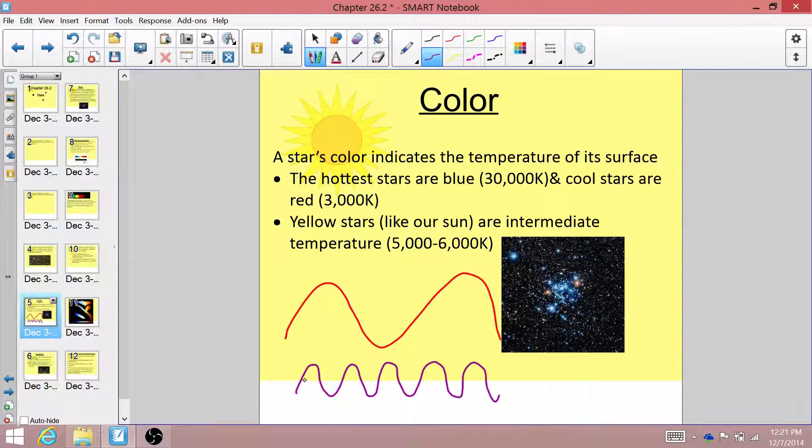If our sun were violet hot, it would probably be too hot to sustain life on Earth. And if it were red hot, it might not be hot enough to provide the heat and light that we need to survive.